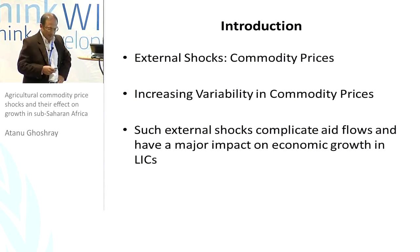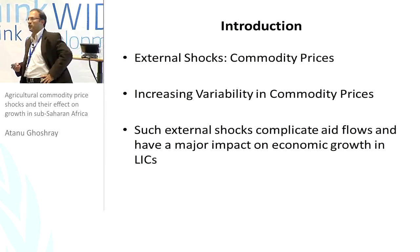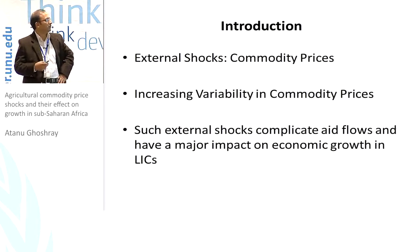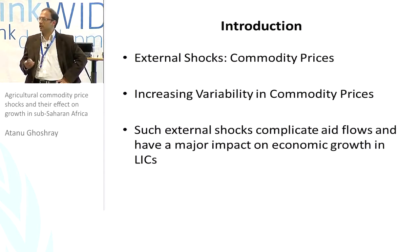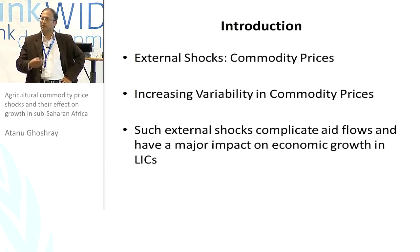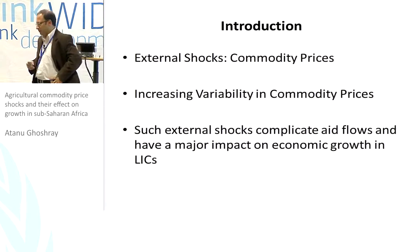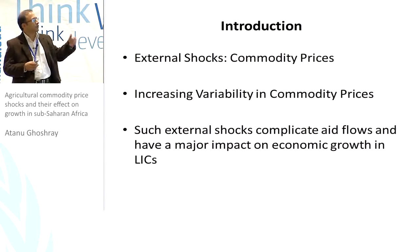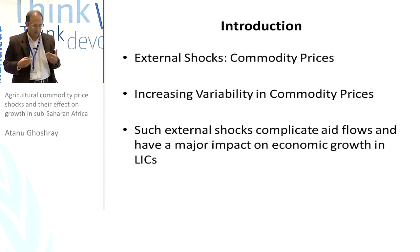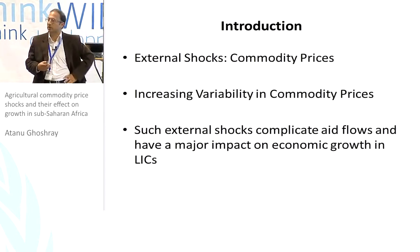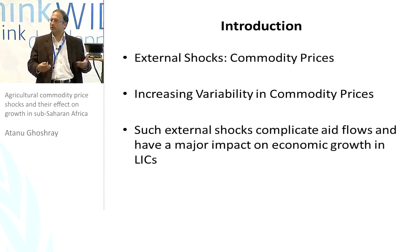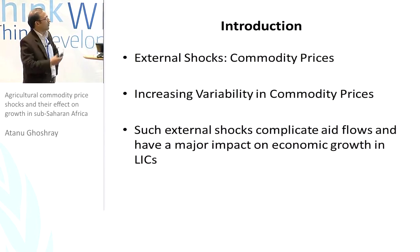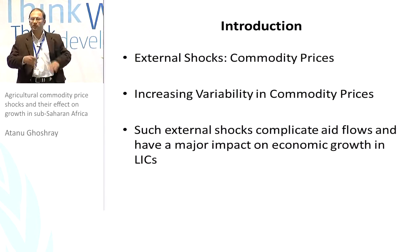The problem with commodity prices is that they are becoming increasingly variable, especially since the 1990s. There are broken trends in commodity prices, and there is persistence which is dynamic in nature. All these contribute to the difficulty in managing economic policies for these movements in commodity prices. When sub-Saharan African countries, which are heavily dependent on commodity prices, see large upswings and downswings, it affects their income, and this has impacts on aid flows as well.